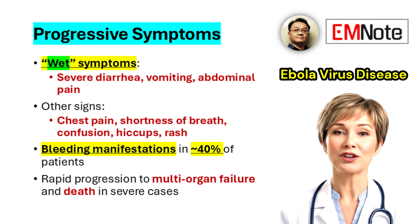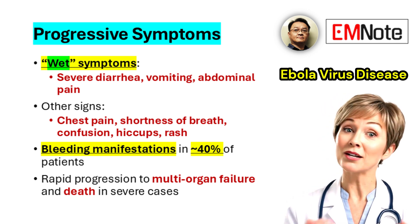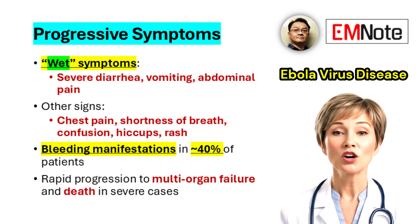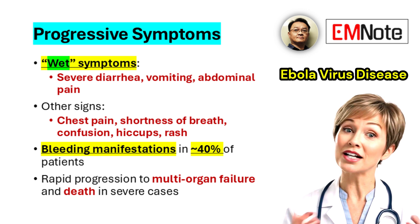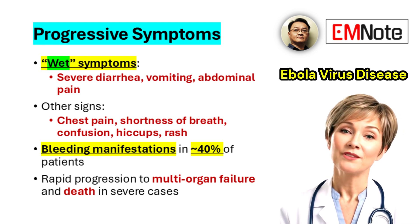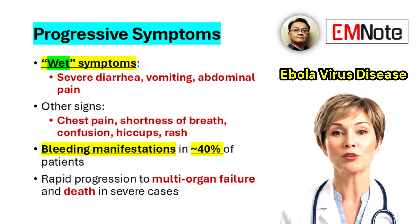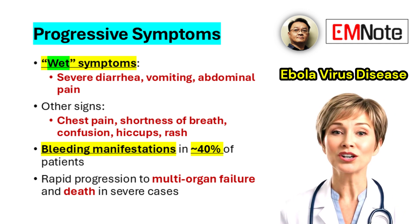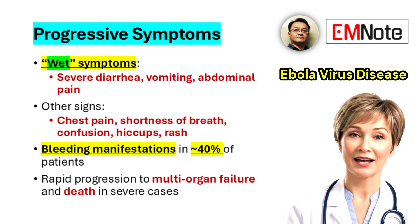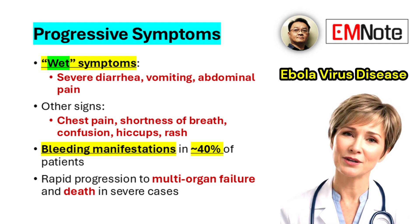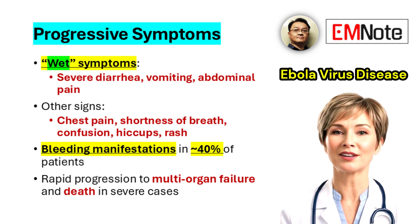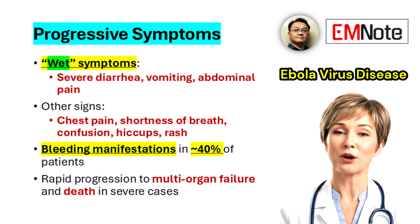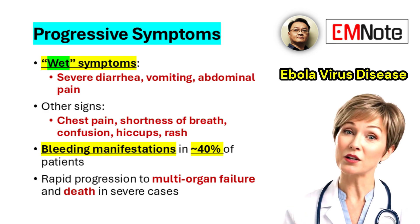Additional symptoms may include chest pain, shortness of breath, confusion, eye irritation, and hiccups. A maculopapular rash often appears 5 to 7 days after symptom onset. Bleeding manifestations, reported in approximately 40% of patients, may present as petechiae, ecchymosis, oozing from venipuncture sites, mucosal hemorrhage, or bleeding from the gastrointestinal tract. Severe cases can rapidly evolve into multi-organ failure, shock, and death.